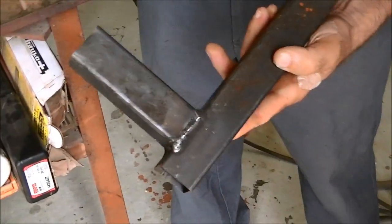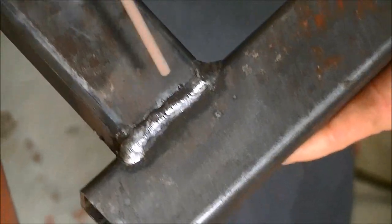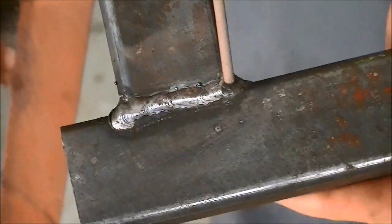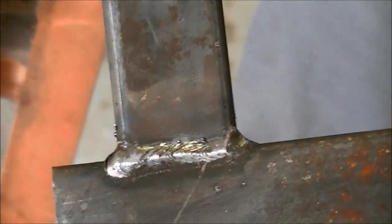This one is done with a 6013 and you kind of jack it in and out so you don't get the metal too hot. You can see the little ripples, nice, pretty, no undercut. The flux flakes off real easy.